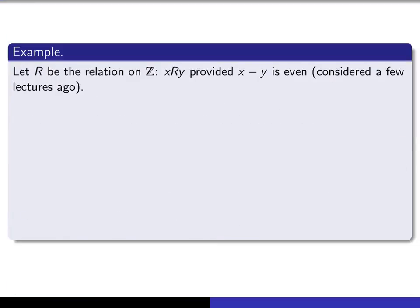Let's now relate this notion of equivalence classes to a relation that we looked at previously. This was the relation on the set of integers where we said X is related to Y provided X minus Y is even. So what is the equivalence class of 0? That's the set of all Y such that 0 minus Y is even, which means minus Y is even — and that's precisely the set of even integers. So 0 slash R is the set of all even integers.